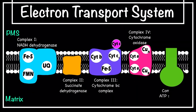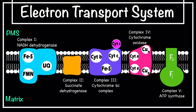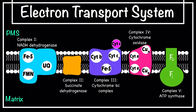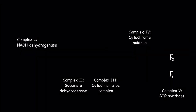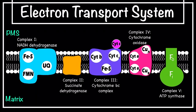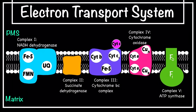Complex IV consists of two copper centers. The last complex is Complex V, also called ATP synthase, as it is directly involved in ATP synthesis. ATP synthase consists of two parts: the F1 part, which has catalytic activity, and the F0 part, which acts as a facilitated diffusion channel for the movement of protons.